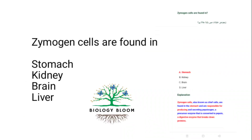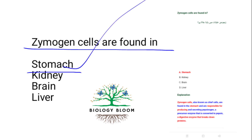Next, taken as it is: zymogen cells — which structure are they found in? They are found in the stomach.